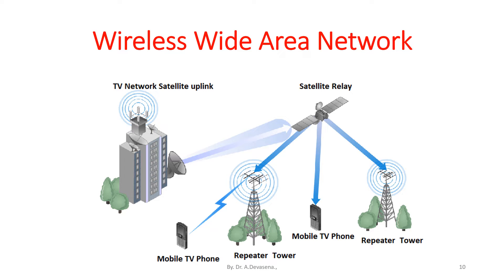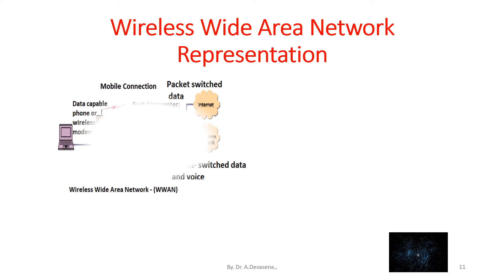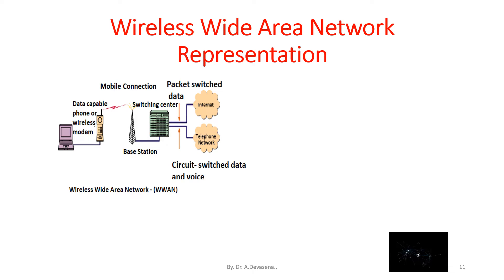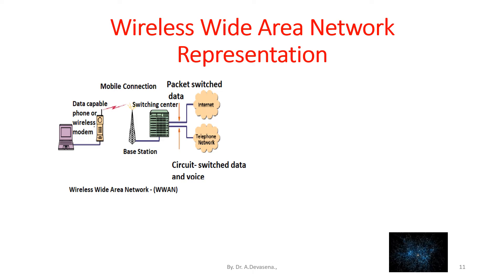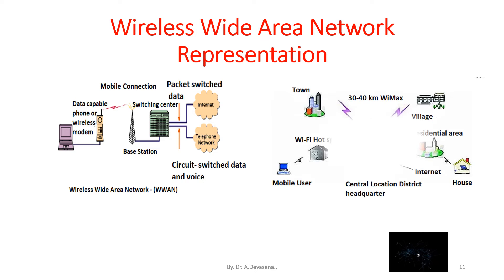Here is another animation showing the connection between devices and the internet through the router. Another representation of wireless wide area network is shown here — with the help of a repeater tower the signal reaches the mobile TV phone. Another representation shows that between the PC and the internet, a base station and base switching center are available, through the packet switched domain or the circuit switched domain, connecting to the internet or telephone network.